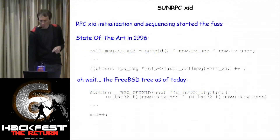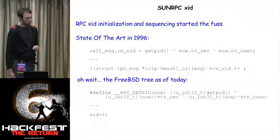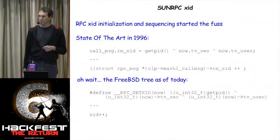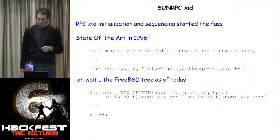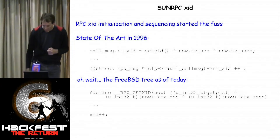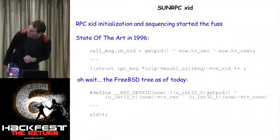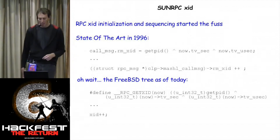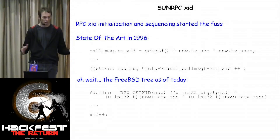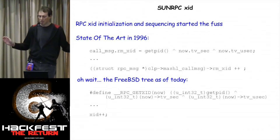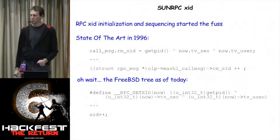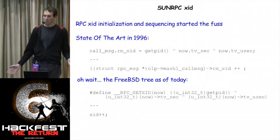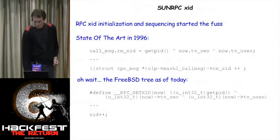Among the many things we found and fixed, randomization soon showed itself as a very weak area. The first place that was really bothersome was in the Sun RPC code in libc. The XID in the RPC messages was basically just the process ID XOR'd with parts of the time, and every single time a new RPC message was sent it was incremented. This is in libc, so it's very difficult to go and improve — in FreeBSD it's still broken to this day.